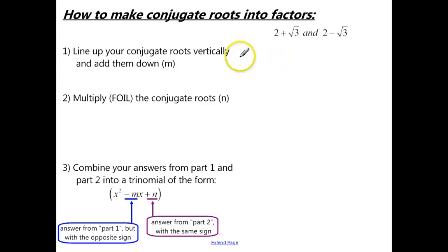So first, we want to line up our conjugate roots vertically and add them down. So I'm going to take 2 plus the square root of 3, and then 2 minus the square root of 3, and we're going to add downwards. So 2 plus 2 is 4. The square root of 3 minus the square root of 3, that becomes 0.